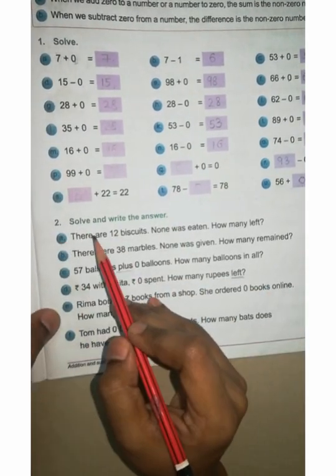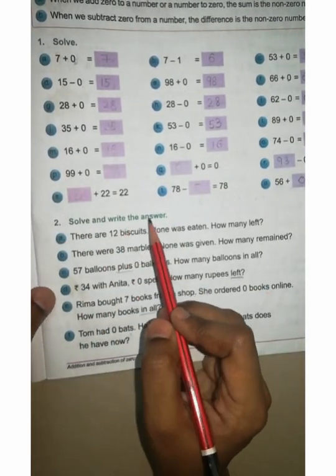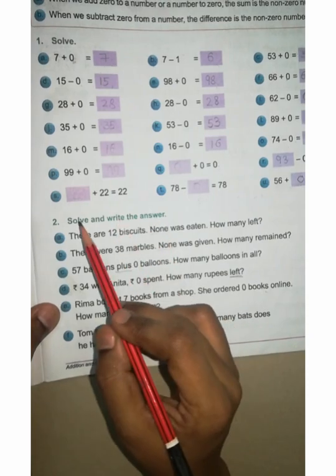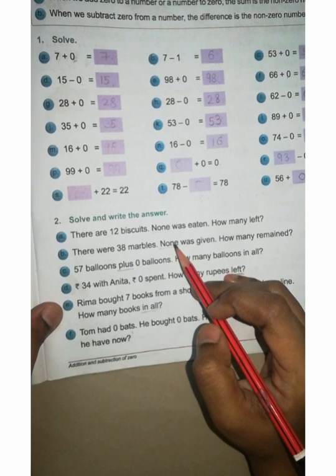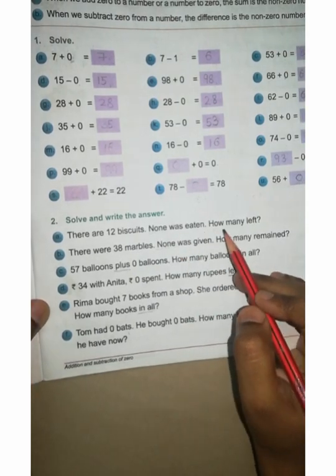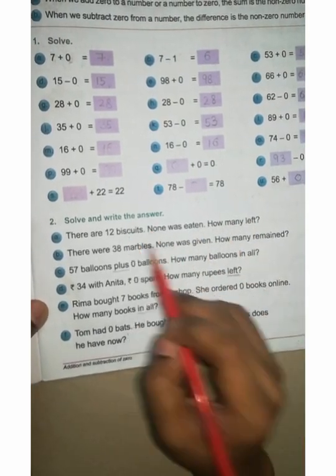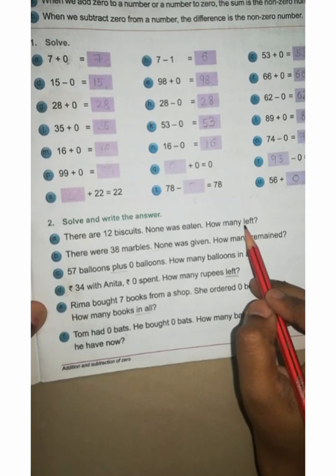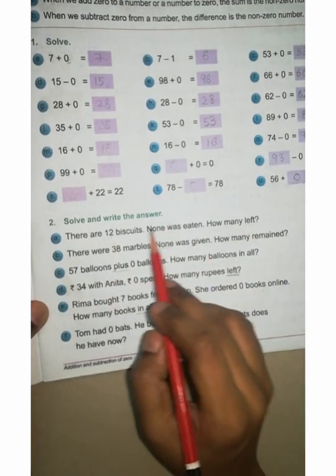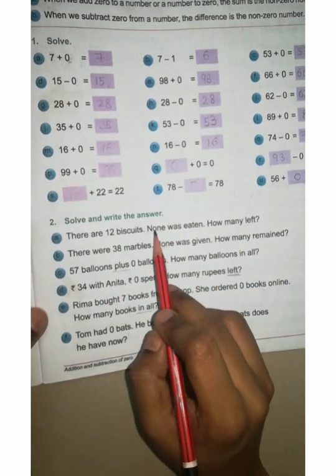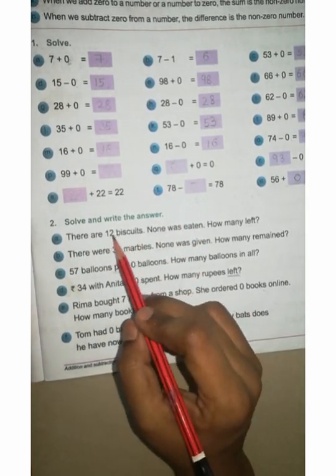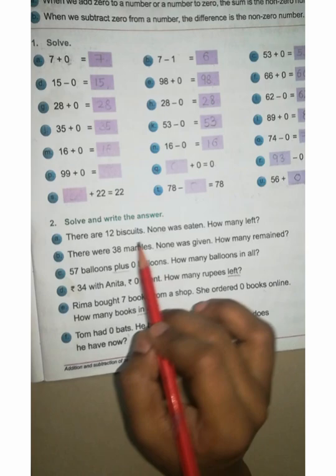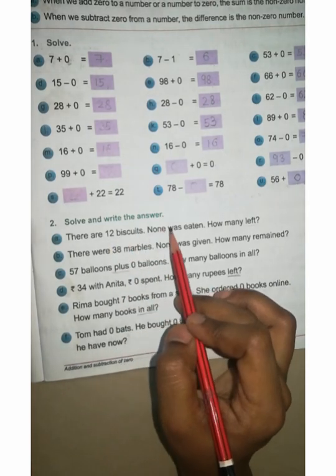Now number 2: Solve and write the answer. A: There are 12 biscuits, none was eaten, how many left? Now you can see left asking, it means subtraction. This is subtraction, first line question given, subtraction form. Okay. Now 12 minus none means 0. 12 minus 0, as it is you can write, also 12.